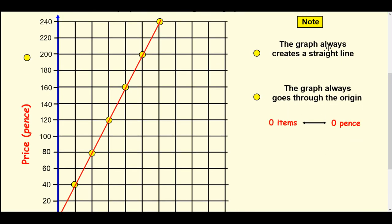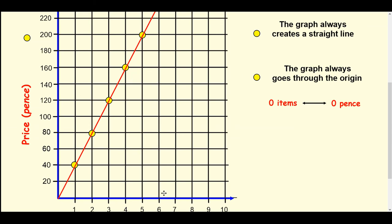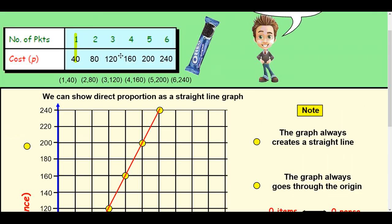A couple of things to note, the graph always creates a straight line. If you've done something wrong, like plotted a coordinate wrong and got something like this and it didn't form a straight line, you've done something wrong with your coordinates or in your table, something's happened.